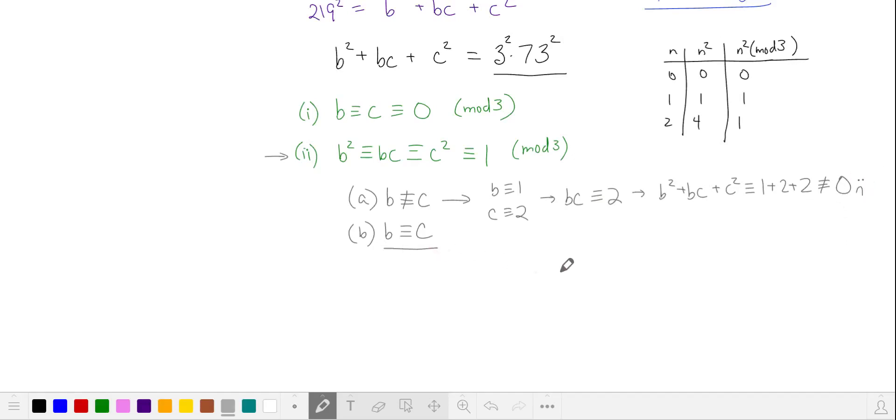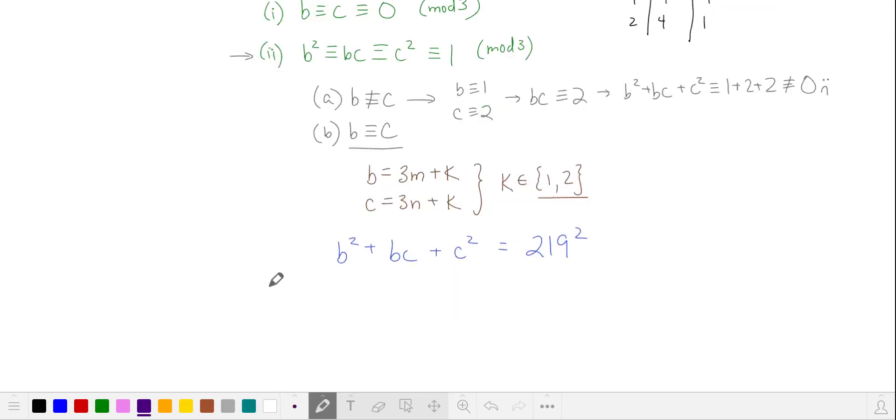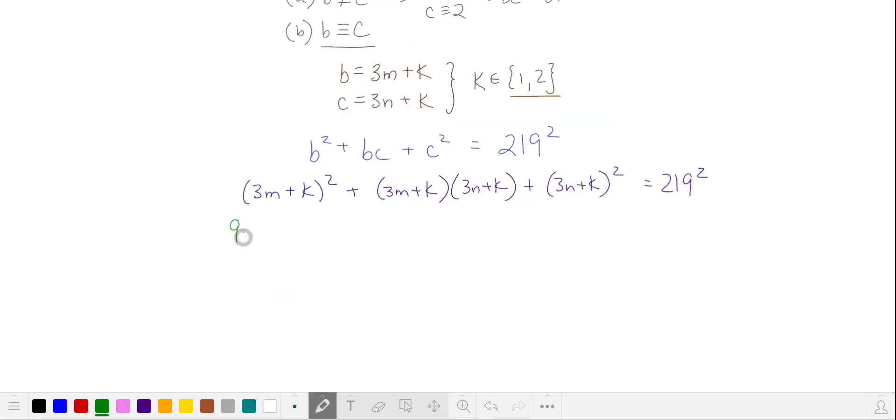Let's see if we can have b and c be equivalent to each other. This means that b and c can be written as k more than a multiple of 3, where k is equal to 1 or 2. Let's plug this in and see if it works. We'll expand these binomials and we'll combine like terms.